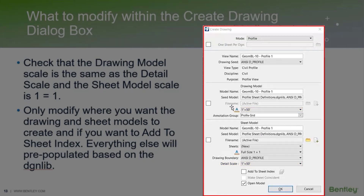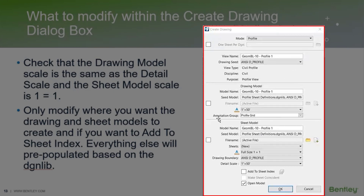Sometimes you might use a DGNLib, a drawing seed, and you want it at a different scale from what the DGNLib is, so you want to make sure that those match up. Otherwise, your annotation scale will look off. Everything else should pre-populate from the DGNLib.